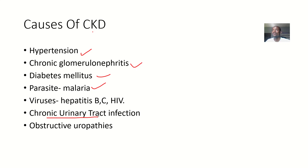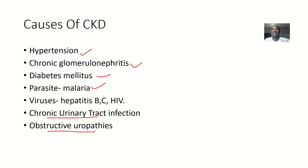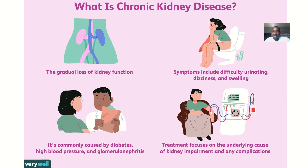UTIs — any urinary tract infection — can actually cause chronic kidney disease. Chronic kidney disease, as you already know, is a disease of the kidney that has been present for more than three months. Other causes include obstructive uropathies — any disease condition where there is mechanical obstruction in the urinary tract, either in the urethra, the bladder, or any other place — which can cause a backlog of urine and result in kidney disease.